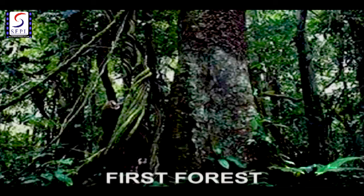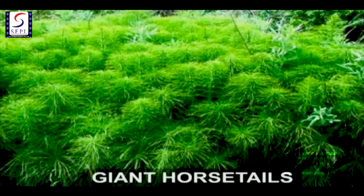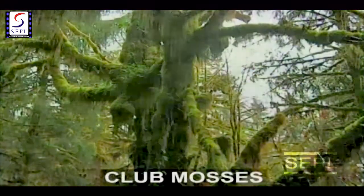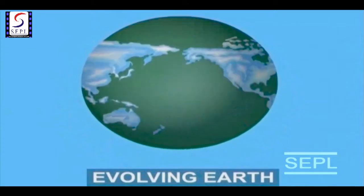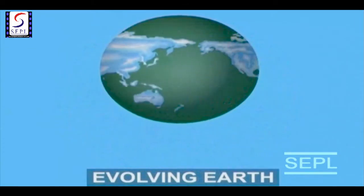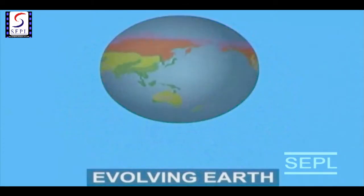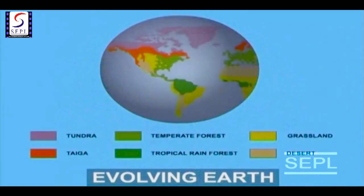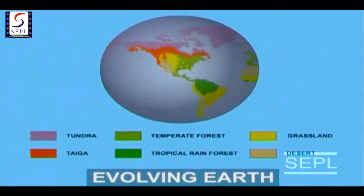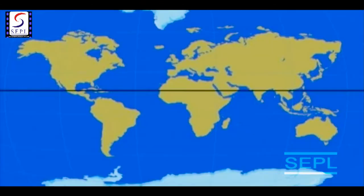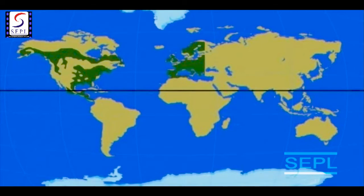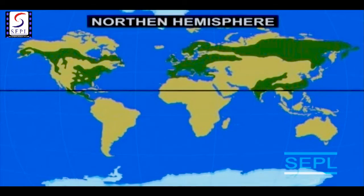The first forests were dominated by giant lycopsids, club mosses and ferns that measured up to 40 feet tall. Life was continuously evolving on Earth. During the Ice Age, the landscape of Earth again went through a transformation, and the surface of the planet that had been dominated by tropical forests for millions of years changed. This resulted in the spread of temperate forests in the northern hemisphere.